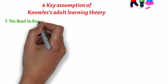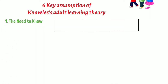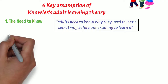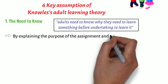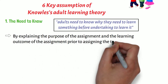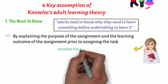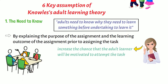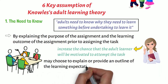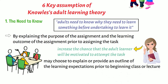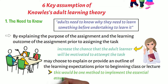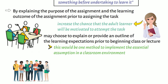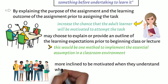First, the need to know. The first assumption states that adults need to know why they need to learn something before undertaking to learn it. By explaining the purpose and learning outcome of the assignment prior to assigning the task, the instructor can increase the chance that the adult learner will be motivated to attempt the task. Faculty members may choose to explain or provide an outline of the learning expectations prior to beginning class or lecture, and this would be one method to implement this assumption in a classroom environment. Adult students are more inclined to be motivated when they understand what they are expected to learn.